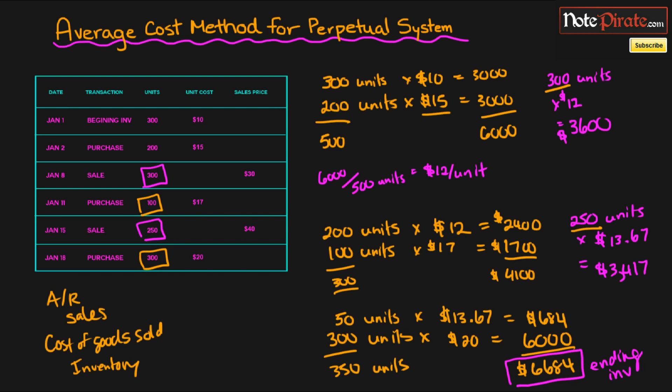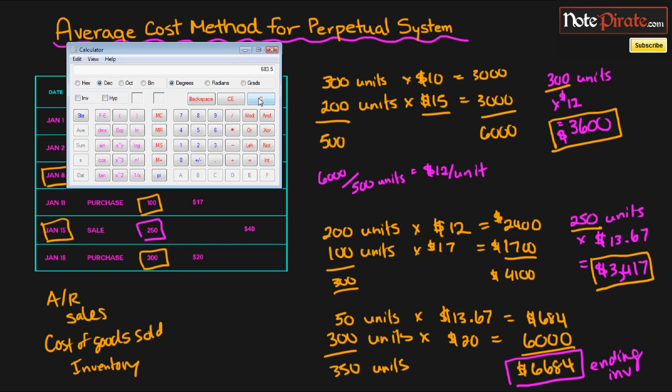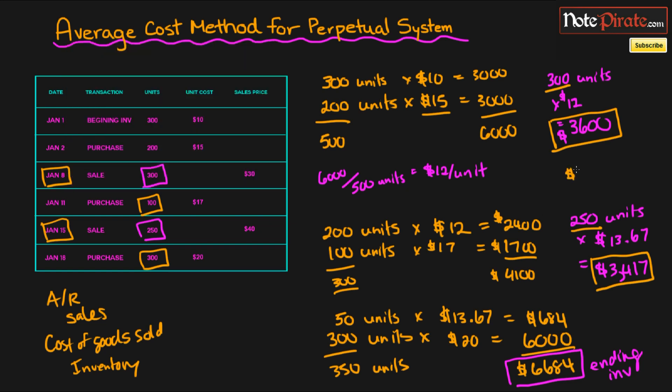And of course, to get our cost of goods sold, we just look at the cost or the expense of selling that 250 units on January the 15th. And we look at the expense for the inventory we sold on January the 8th. So we add those up, and our $3,600 plus $3,417 is going to be $7,017.